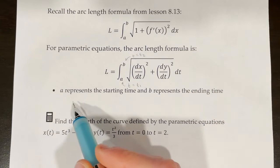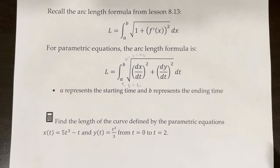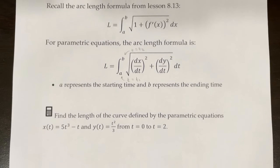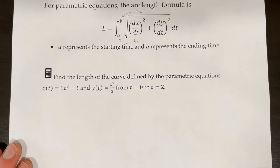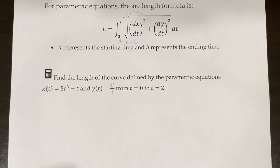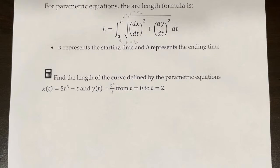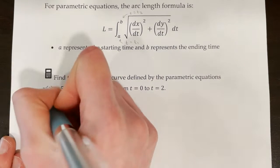As mentioned, a represents the starting time and b represents the ending time. Let's try an example: find the length of the curve defined by the parametric equations x(t) = 5t³ − t and y(t) = t²/3, from t = 0 to t = 2.